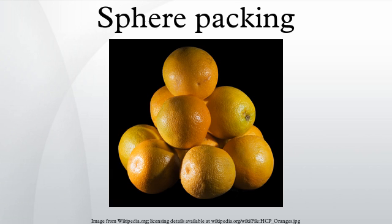There are thus three types of planes, called A, B and C. Two simple arrangements within the close-packed family correspond to regular lattices. One is called cubic close-packing, where the layers are alternated in the ABCABC sequence. But many layer stacking sequences are possible and still generate a close-packed structure. In all of these arrangements, each sphere is surrounded by twelve other spheres, and the average density is approximately 74%.